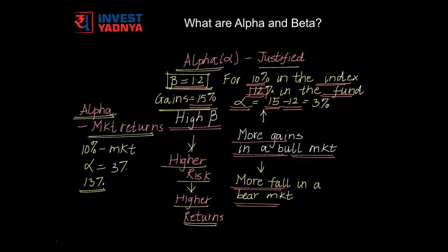The alpha generated by a fund is the value added by the fund manager, as the alpha gained is not due to general market movement but due to the decisions made by the fund manager. There could be situations when the alpha is negative, which indicates that the fund has underperformed compared to what was expected from it. A one-time alpha cannot make a fund an exceptional fund — the fund has to consistently generate alpha to establish itself as one that generates good returns.